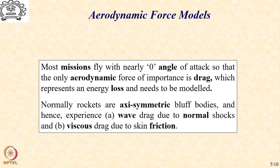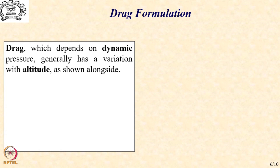In this regard, we note the following. Normally, rockets are axisymmetric bluff bodies and hence are subject to two drag components: wave drag due to normal shocks, and viscous drag due to skin friction. Typically, the drag is driven by a parameter called the dynamic aerodynamic pressure, which is nothing but half density into square of velocity, and an aerodynamic parameter which determines the extent of aerodynamic force that will get generated.